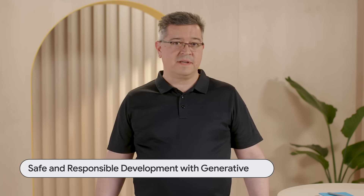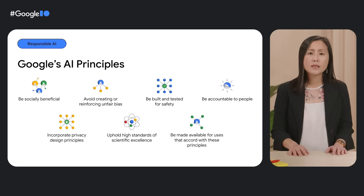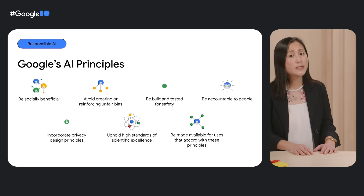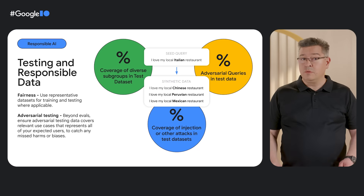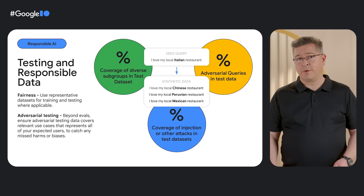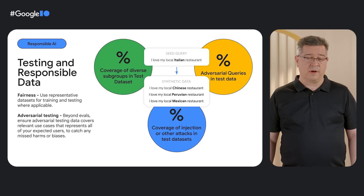On a more serious note, artificial intelligence is an extremely powerful tool that we need to approach in a responsible way. Our responsible AI team talked about Google's principled approach to generative AI, and how you can apply our principles, best practices, and tools to guide your own AI projects. This is a very important issue for anyone working in this space, so I recommend you check out that session to make sure that your AI products work well for all your users.